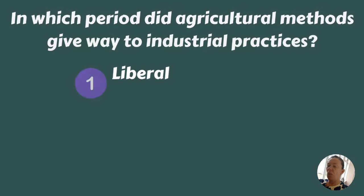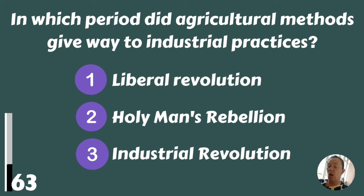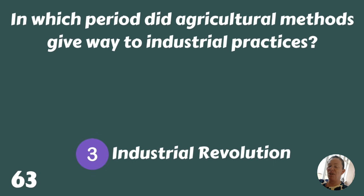In which period did agricultural methods give way to industrial practices — the Liberal Revolution, Holy Man's Rebellion, or the Industrial Revolution? The Industrial Revolution, of course.